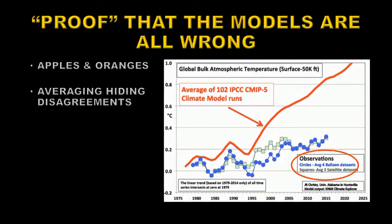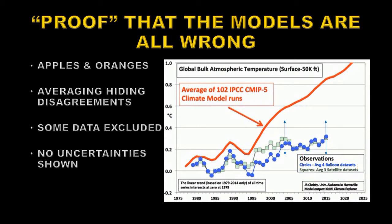Secondly, the data sets below are averages of multiple data sets, and some of those data sets show much better agreement with the models than others. In fact, they've excluded some of the ones that show the best agreement. The data should have uncertainties on it based on the fact that it's an average, and those uncertainties should be fairly large. They also haven't shown the uncertainties on the models, and if the uncertainties on the data overlap with the uncertainties on the model, then the models are consistent with the data.